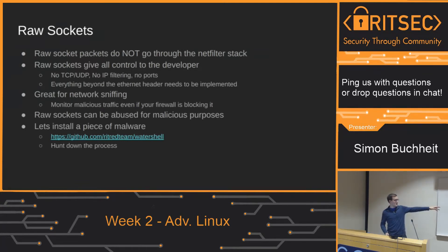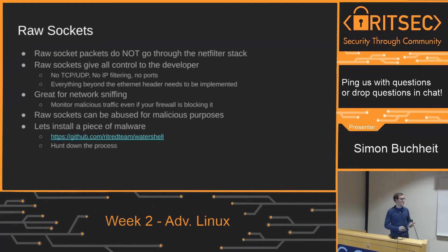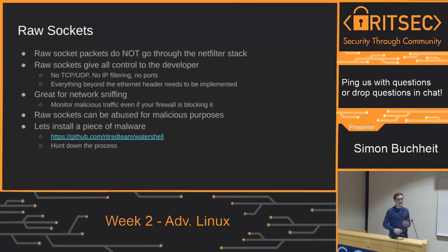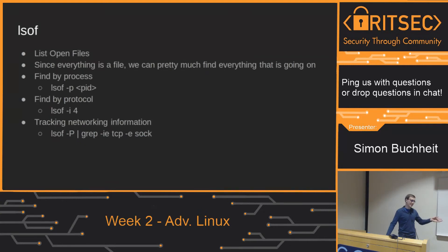This link is to the RIT Red Team's GitHub page, specifically to a tool called WaterShell, which is an implementation of raw sockets in C++. A good exercise is to install WaterShell and play around — I recommend blocking all your firewalls, literally block all traffic, and then WaterShell will still be able to communicate between its server and your box because raw sockets kind of bypass all that filtering. If you want to learn more about this, go watch the talk I gave last week.